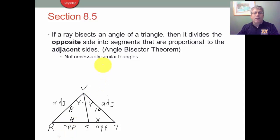And the final one is the Angle Bisector Theorem. The Angle Bisector Theorem says if a ray bisects an angle of a triangle, so we've got this triangle VRT and we've got VS bisecting that because it's dividing it into two congruent angles, then it divides the opposite side into segments that are proportional to the adjacent sides.